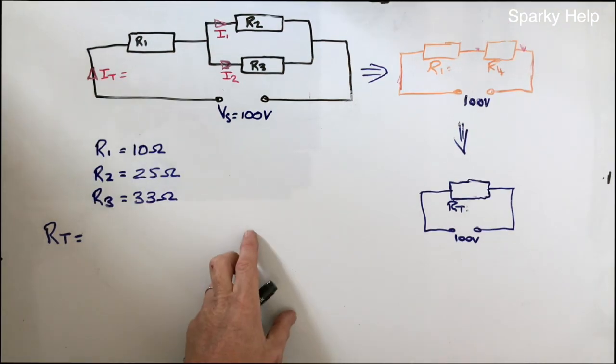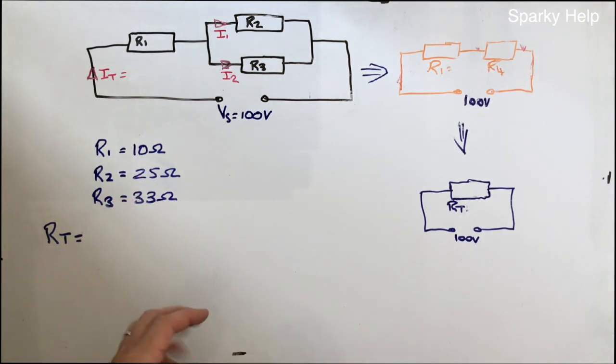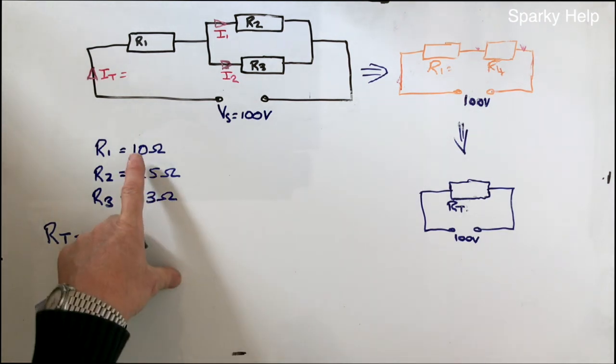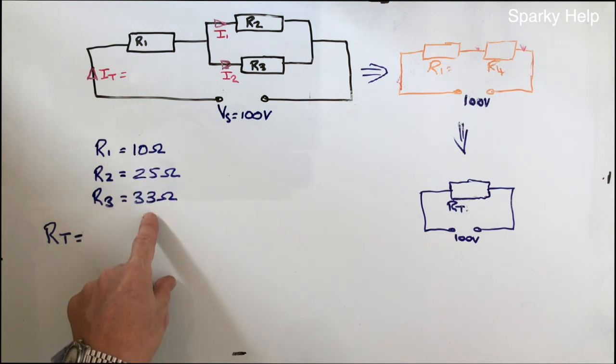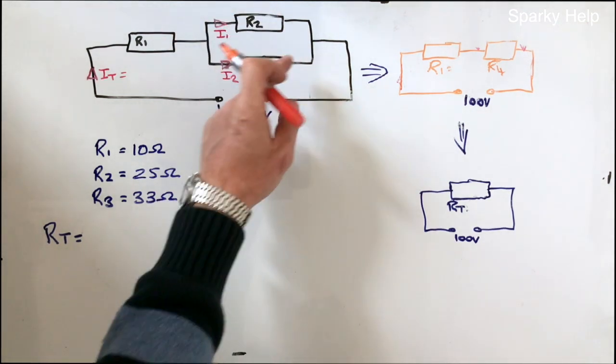OK, let's try it again with a different set of values. More realistic, I suppose, in the sense that it's harder to work out. 10, 25, 33 for that point there. So as before, we need to calculate the parallel part first.